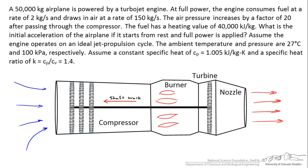We're to assume the engine operates on an ideal jet propulsion cycle, and we're given the ambient temperature and pressure of 27°C and 100 kPa. We assume constant specific heats for air and a heat capacity ratio of 1.4.